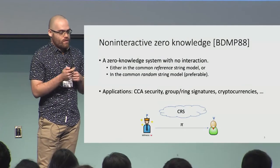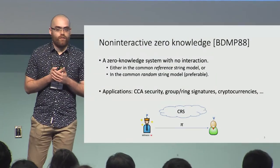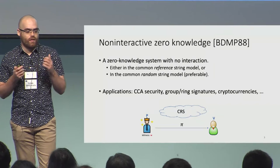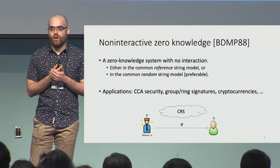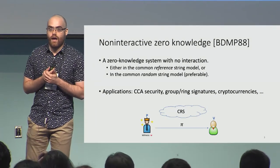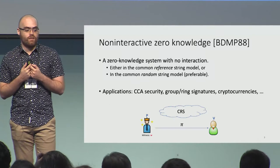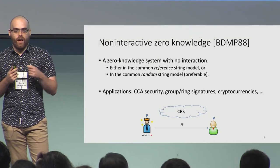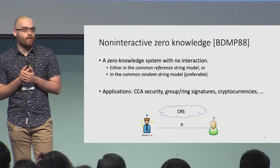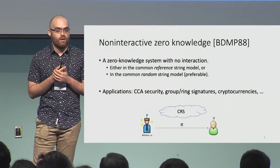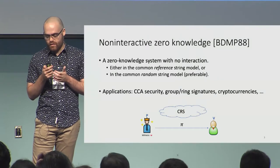NIZK systems have found plenty of applications. For instance, they can be used to achieve CCA security, to build advanced signatures such as group and ring signatures, and most recently they have been used in the context of cryptocurrencies.